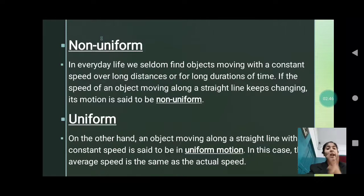There are two kinds of speed: uniform motion as well as non-uniform motion. Let us see what is non-uniform motion. In everyday life, we seldom find objects moving with a constant speed over long distances or for a long duration of time. If the speed of an object moving along a straight line keeps changing, its motion is called a non-uniform motion.